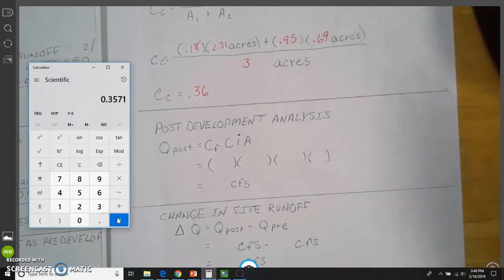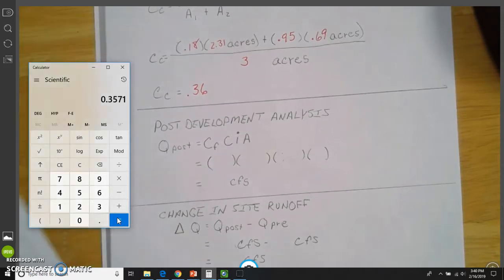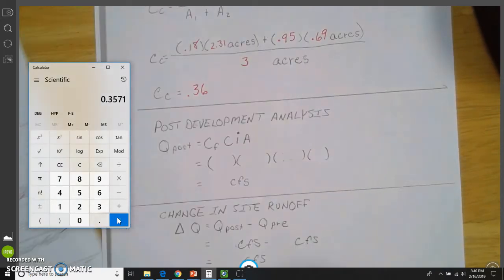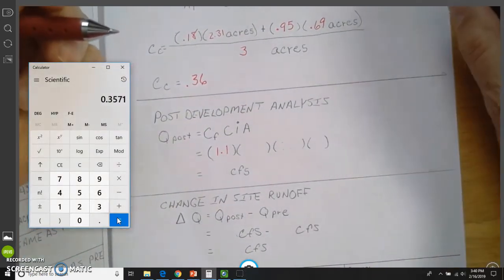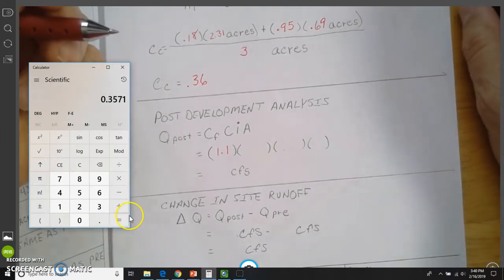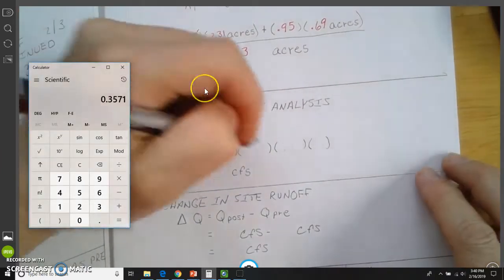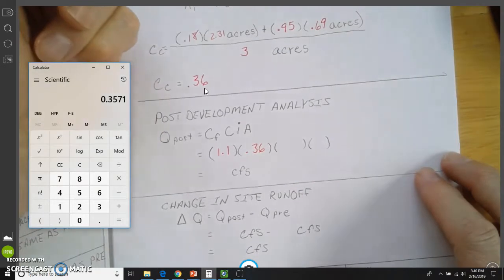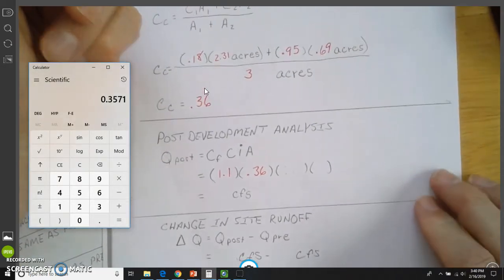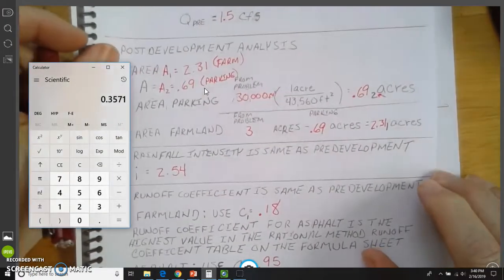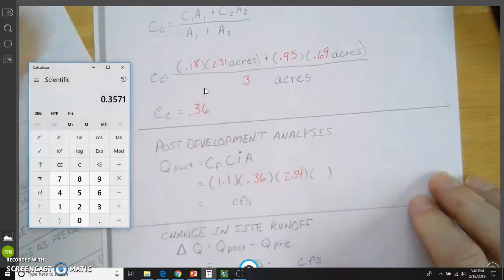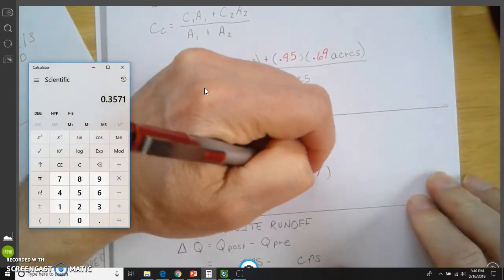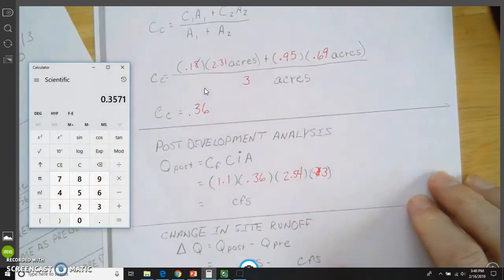Now, post-development analysis. So we're going to start plugging numbers in here. And CF, that is the same value as we were using before, which is 1.1. That's the value from the chart. The C value for this is going to be the 0.36. The I value is the intensity value. That's the same value as we've used all along, 2.54, 2.54. And A is the acreage, which is 3.